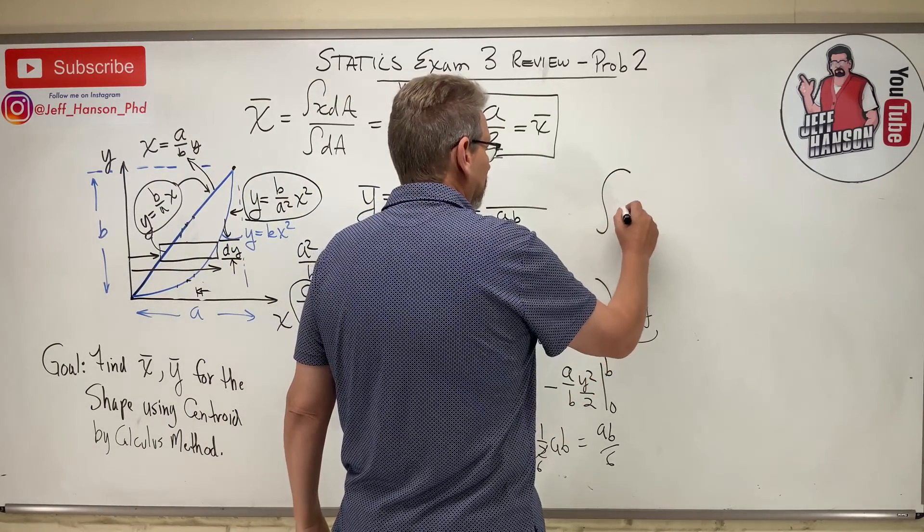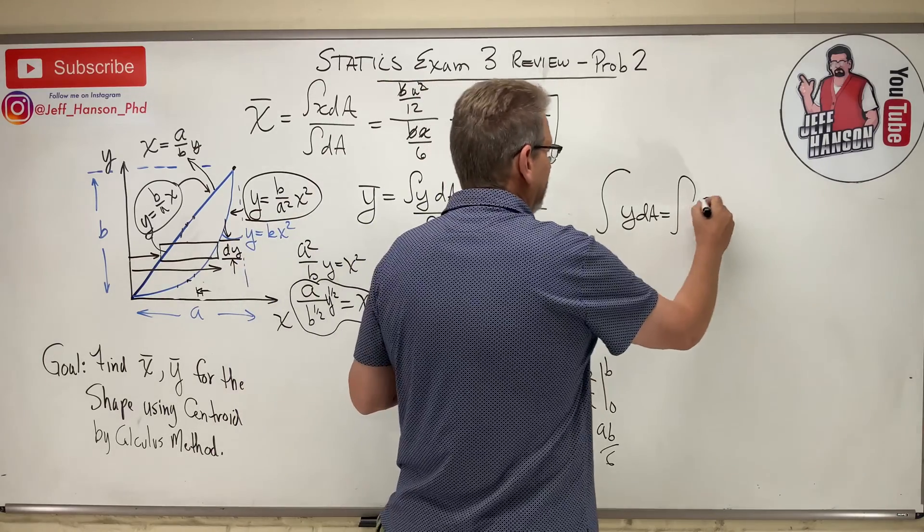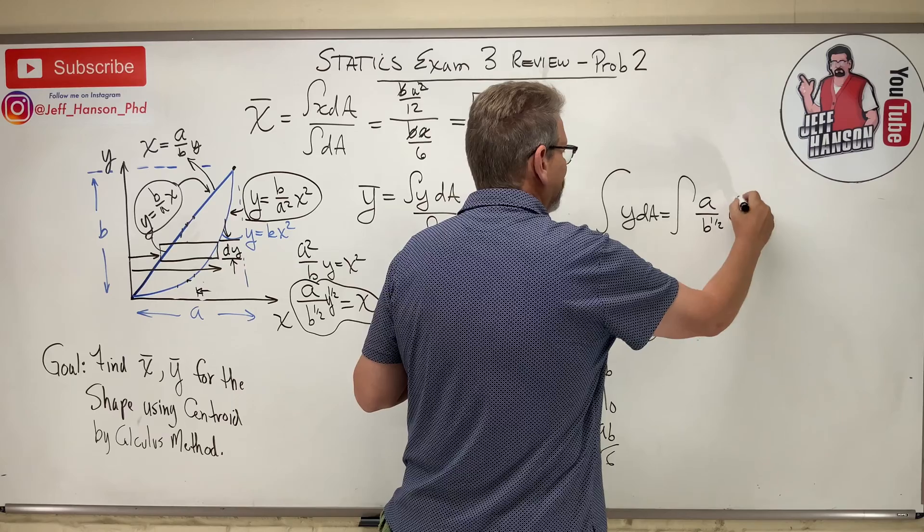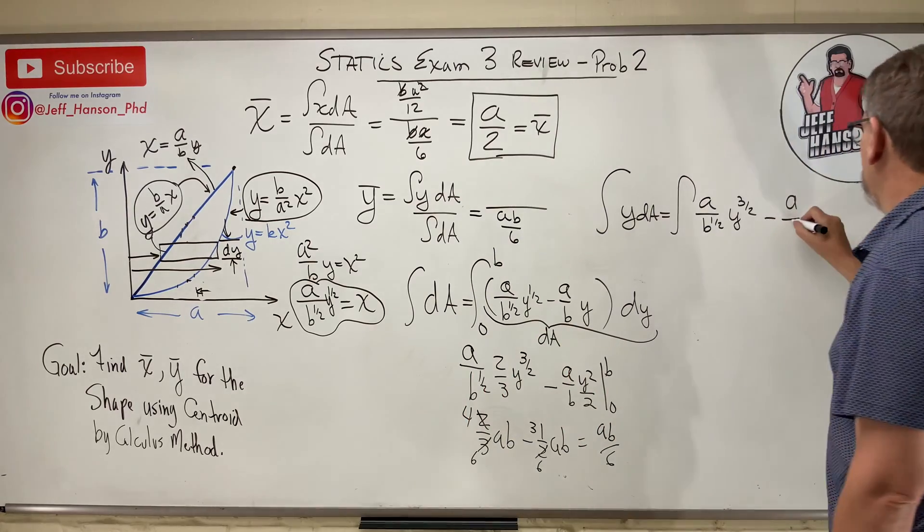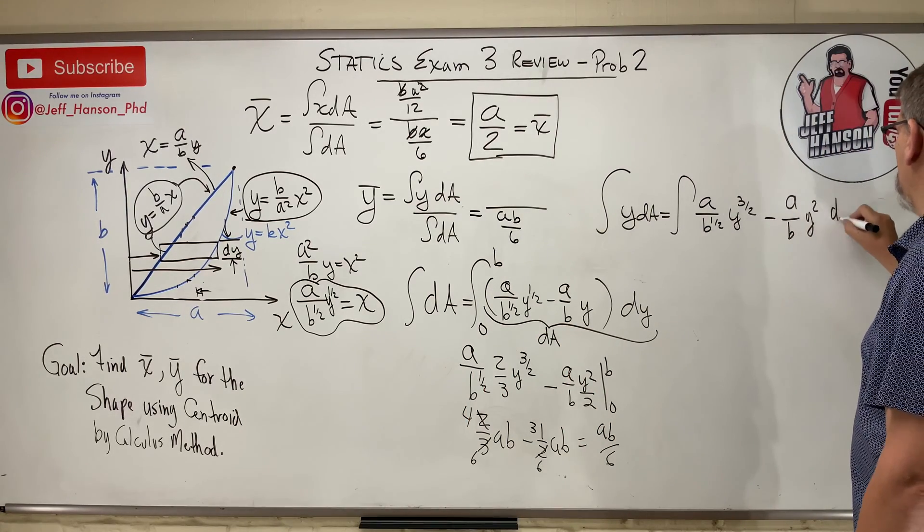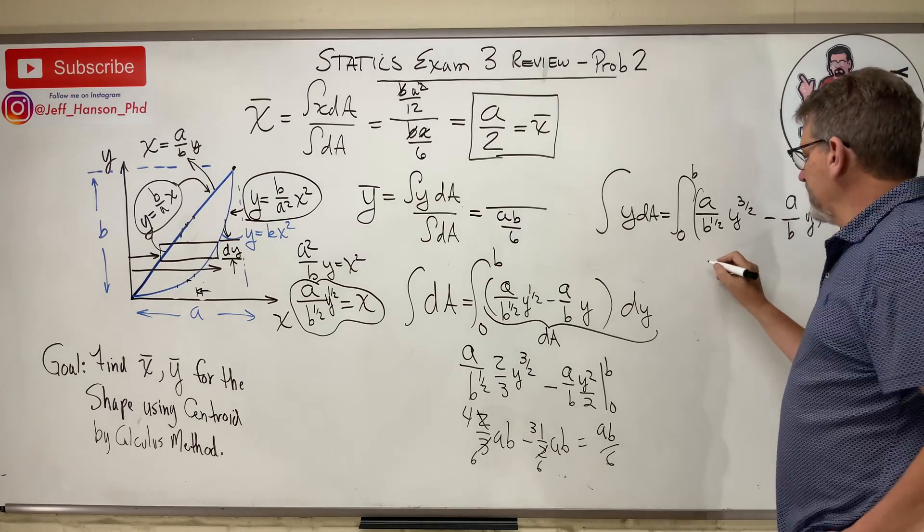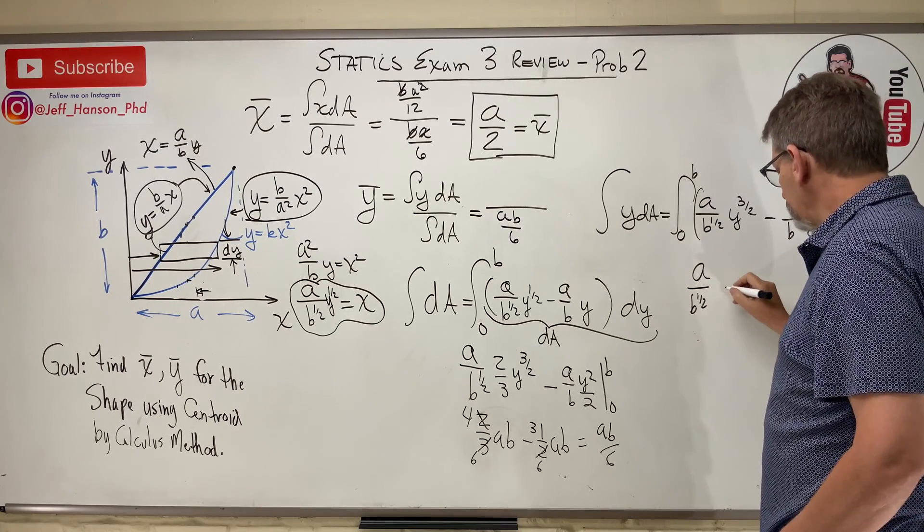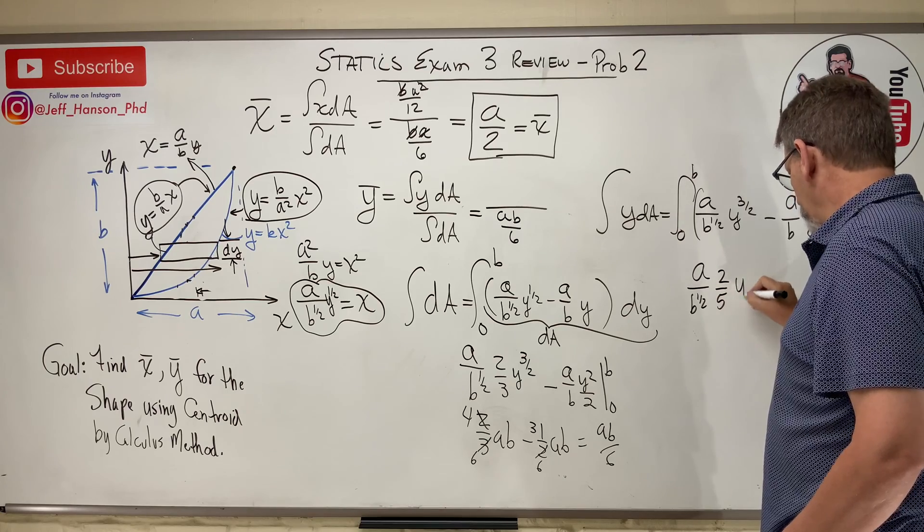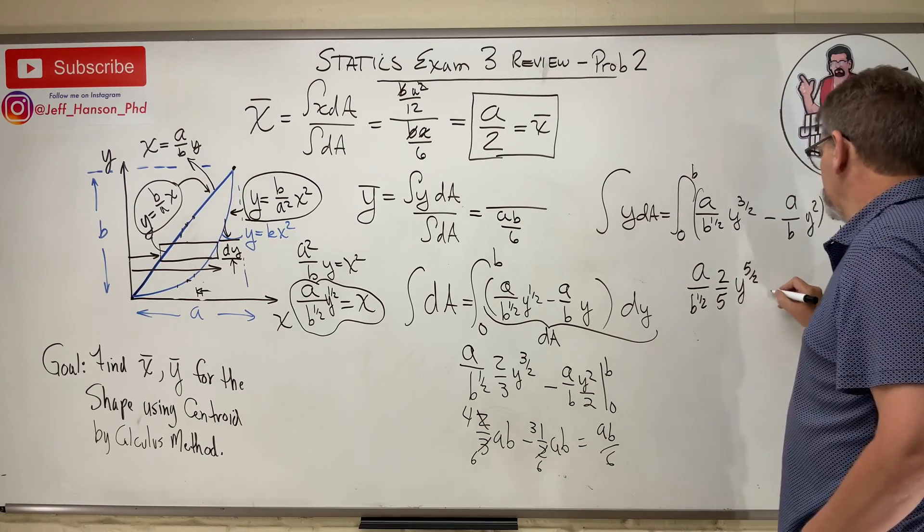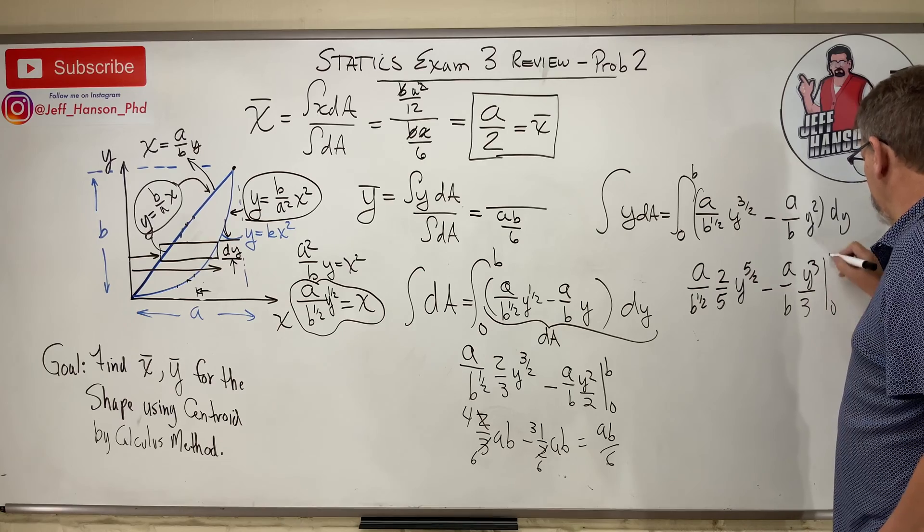The integral of Y dA is equal to, here we go, this is going to turn into what? A over B to the one-half, Y to the three-halves, all right? I'm multiplying by Y, minus A over B, Y squared, dY. And same limits, from zero to B. Now integrate, I get A over B to the one-half, let's see, two-fifths, Y to the five-halves, minus A over B, Y cubed over three, from zero to B.